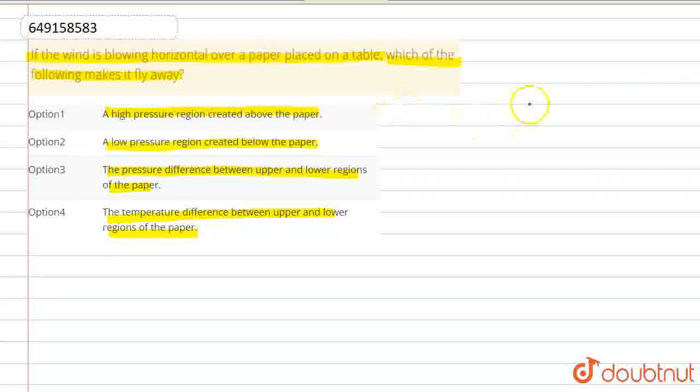We know that wind blows because of pressure differences. Suppose this area is A and this area is B. This area is high pressure and this area is low pressure. So air moves from high pressure to low pressure in this direction.